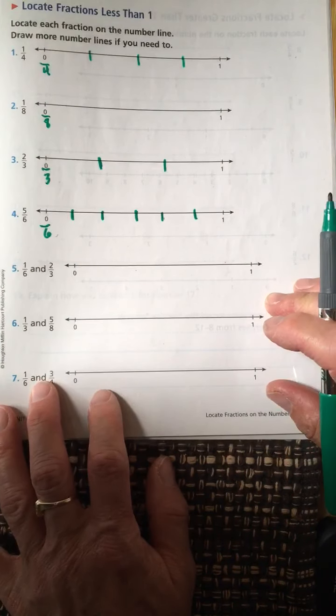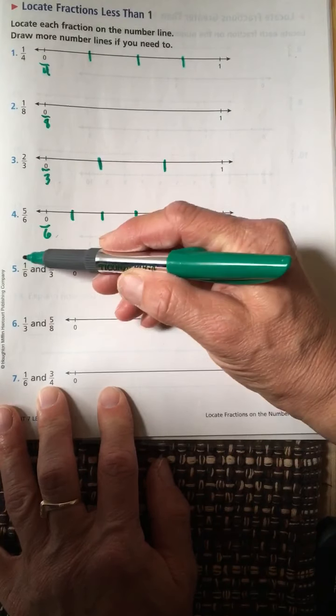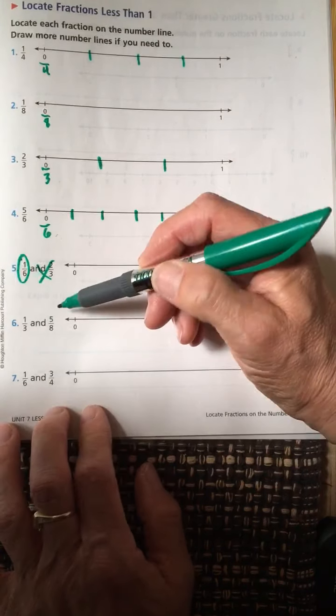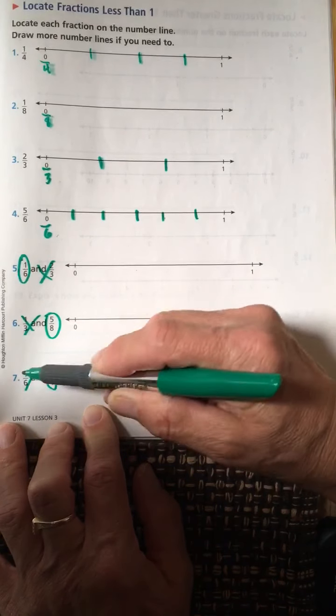Here, we are not going to do both fractions. I don't like it when they do this to children. Just do one sixth on this. Here, just do five eighths. And here, just do three fourths.